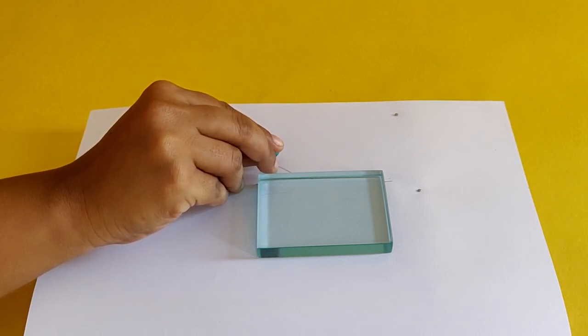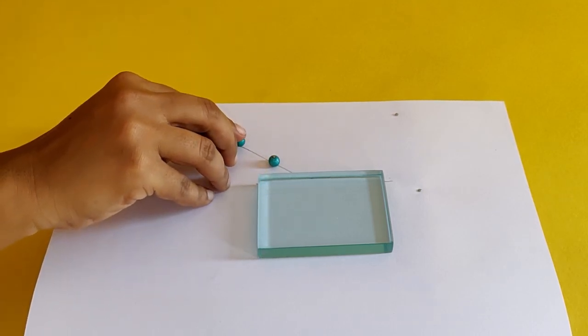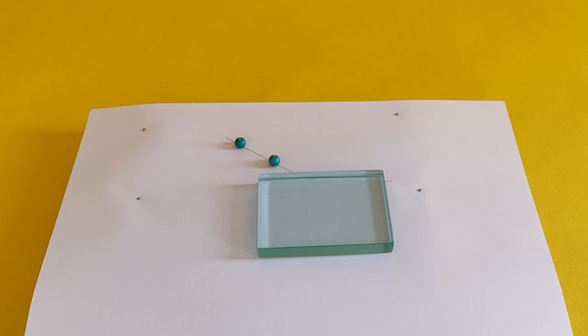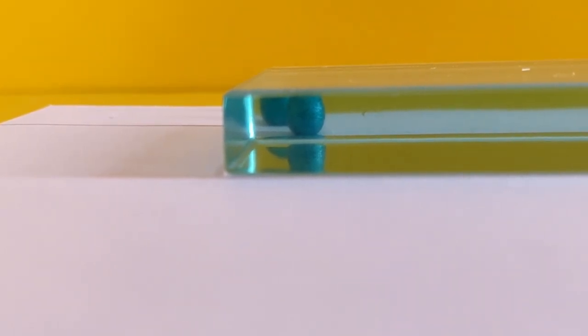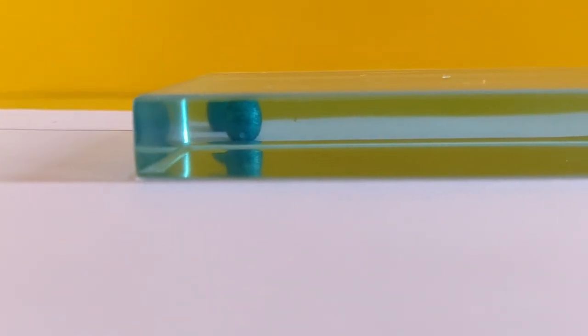Push two ball pins on the incident ray. Looking through the glass slab with one eye closed, try to find the spot where both the pins on the incident ray align.